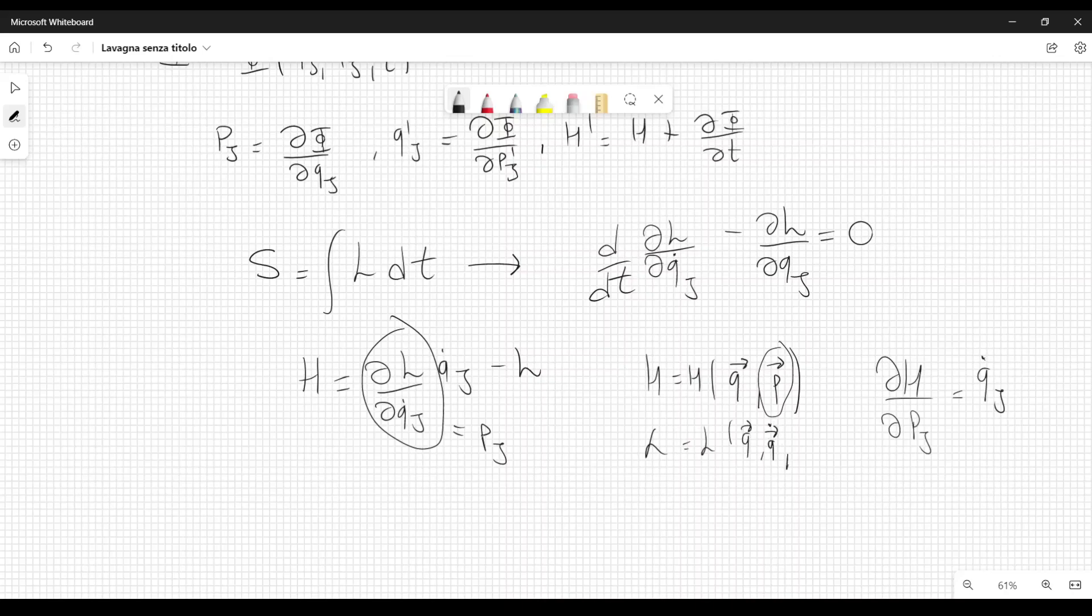But the Lagrangian is defined as a function of positions, q dots, so the velocities, and t. So it does not depend strictly on momenta. So we derive very informally this equation that we will also derive in another manner, in a more formal manner, in a few minutes.